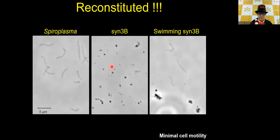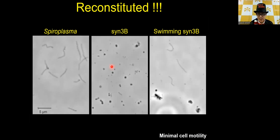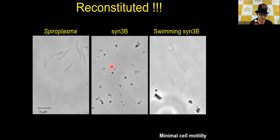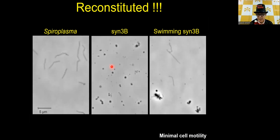This is a typical video of our achievement. The left side shows the real-time Spiroplasma swimming video, the middle is the original syn3 video — cells are just spherical and only show Brownian motion. On the right, we expressed the seven genes in the synthetic cell syn3, and we can see the helical cell shape and sometimes they can swim.